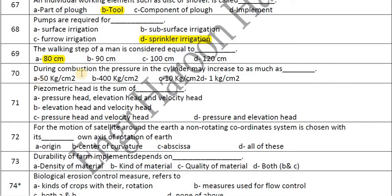During combustion, the pressure in the cylinder may increase to as much as 50 kg per cm². The piezometric head is the sum of pressure head and elevation head.